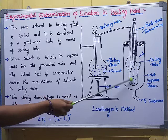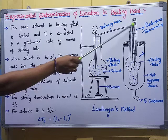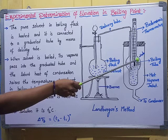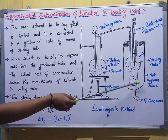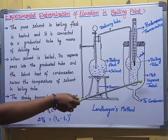This graduated tube is fitted with a Beckman's thermometer to record the temperature. You can observe there is a small hole in this graduated tube which acts as a connection between the hot vapor jacket and the graduated tube. Down below, the hot vapor jacket is connected to a condenser to cool the vapors. This hot vapor jacket maintains the temperature here.